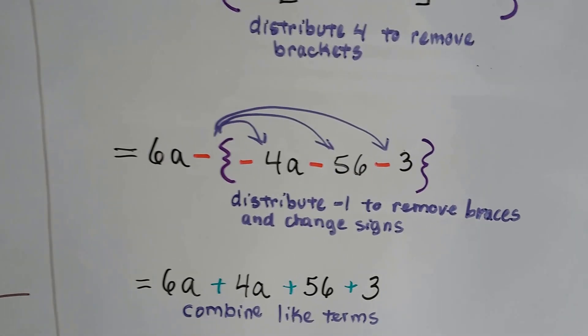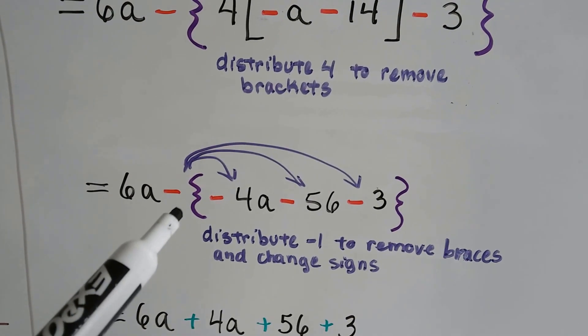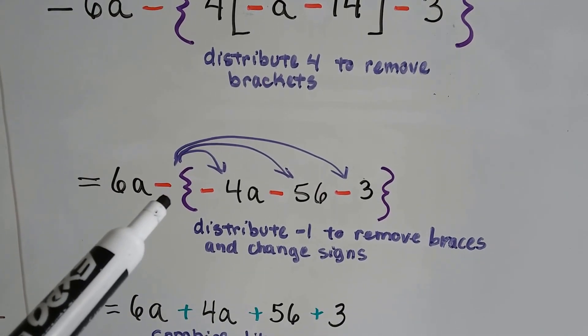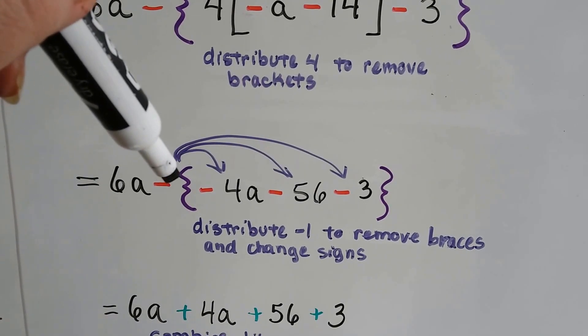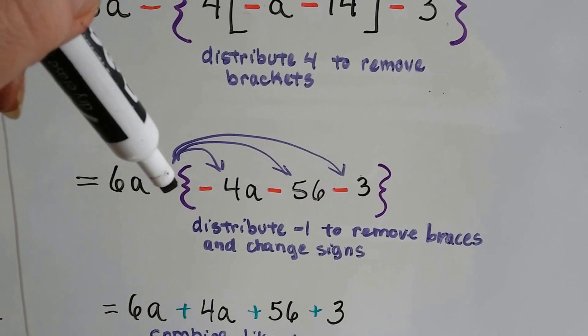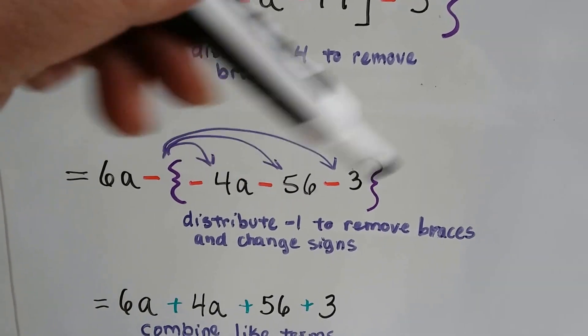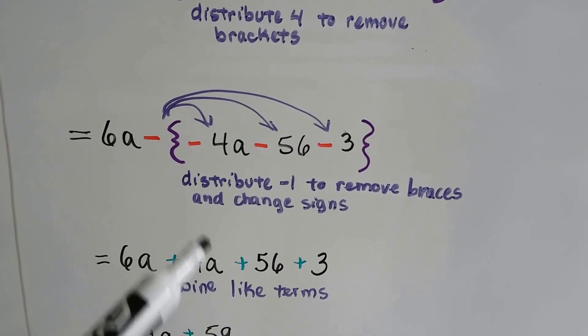So now we can distribute this negative invisible 1 here to remove the braces. And as we learned in the last video, when we have a negative like this, a negative 1, and we're going to distribute it, all we have to do is just change the signs. So this negative, this negative, and this negative sign are going to become a positive, a positive, and a positive. Just change the signs. Don't worry about the multiplication.